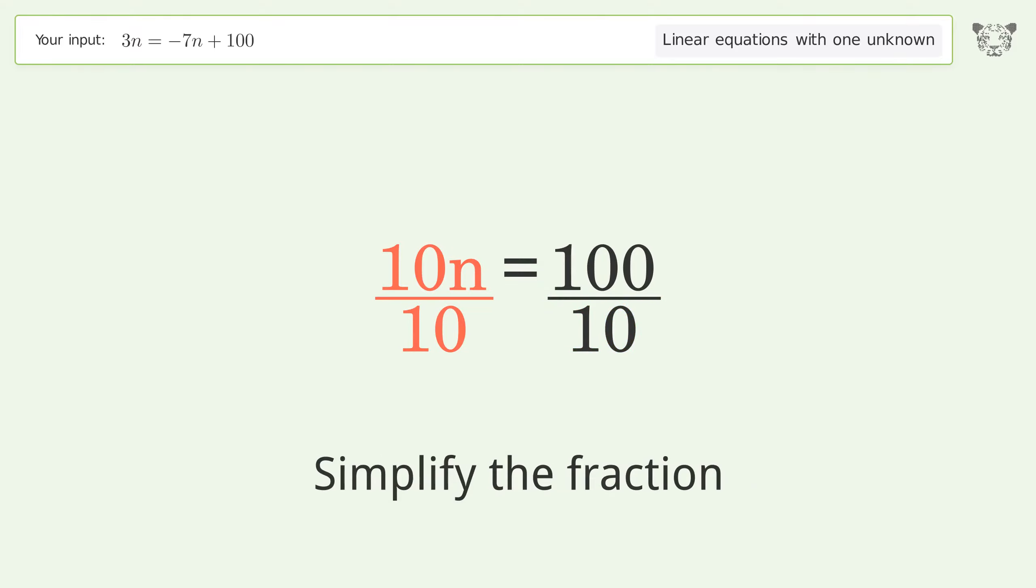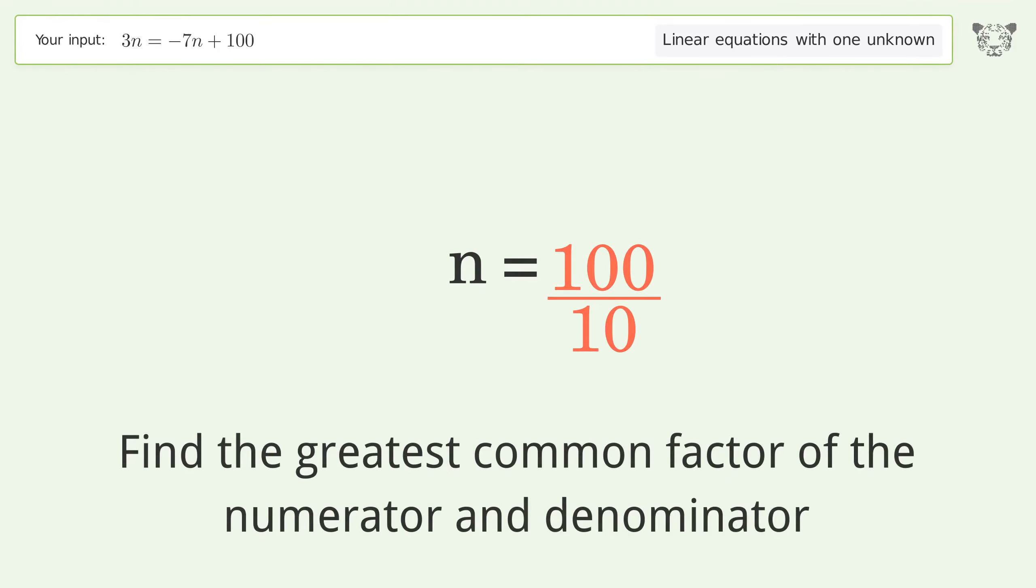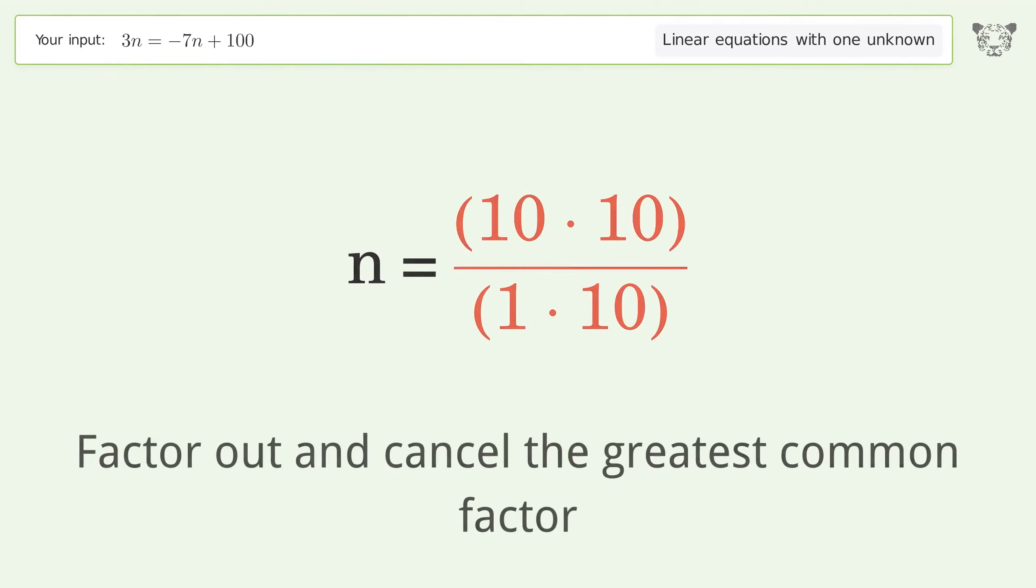Simplify the fraction. Find the greatest common factor of the numerator and denominator. Factor out and cancel the greatest common factor.